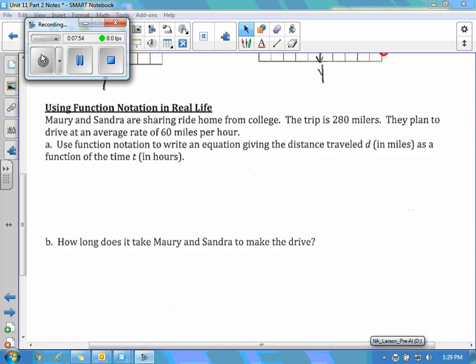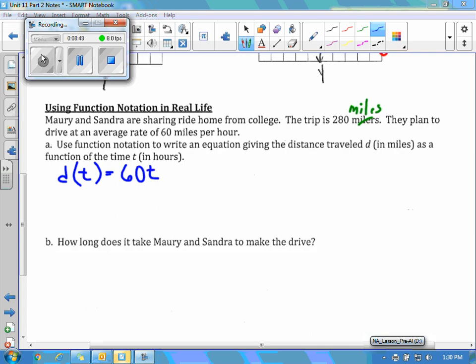The last thing in this section is using function notation in real life. So it says Maury and Sandra are sharing rides home from college. The trip is 280 miles. They plan to drive at an average rate of 60 miles per hour. So part A says use function notation to write an equation giving the distance traveled d in miles as a function of the time. So this is kind of confusing with all the language that they have, but if you think about at the heart of it, we're just doing 60 times the time. But they want everything in terms of d and t. So I'm going to say that the distance that I go d is a function of the time, so d of t equals 60t because I'm going 60 miles per hour. So what I'm saying here is that how far I go, the d, is 60 times the number of hours that I'm going.